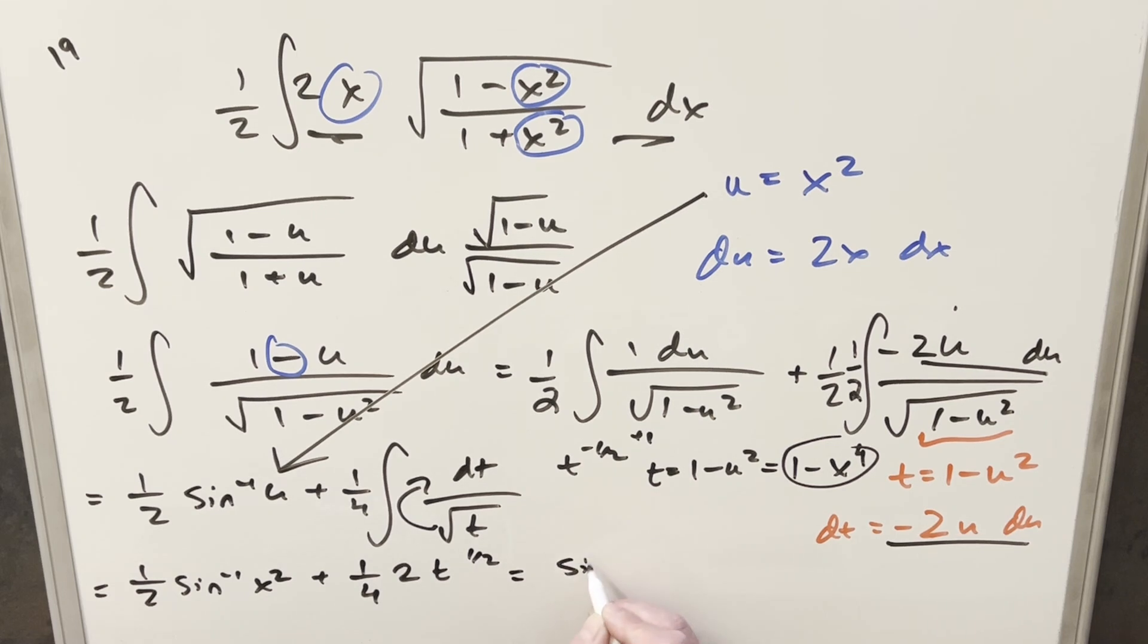So we're going to have arcsine x squared over 2. 2 times 1 over 4 gives me 1 half. This 1 half power, I'll write it as square root. And then plug in for t. We get 1 minus x to the fourth. Add a plus c. And that's it.